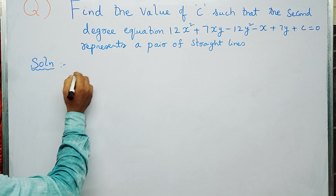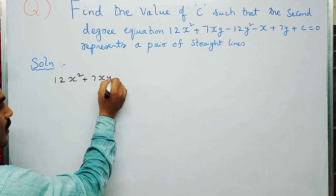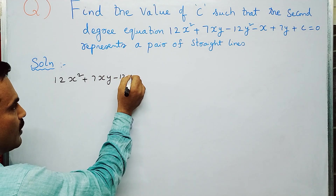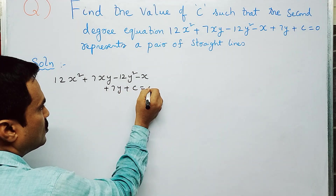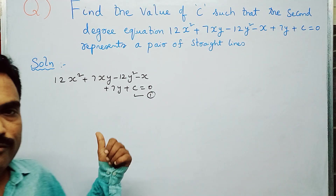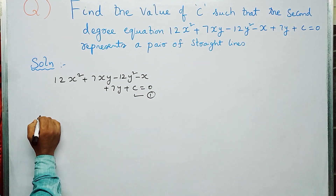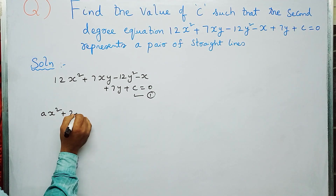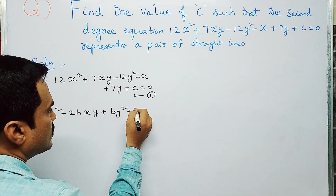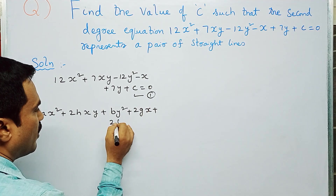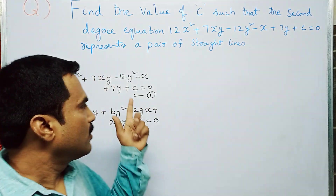First, write the given equation of the conic: 12x² + 7xy - 12y² - x + 7y + C = 0 — this is equation number one. Next, write the general equation of the conic: Ax² + 2Hxy + By² + 2Gx + 2Fy + C = 0. We need to compare this general equation with the given equation.